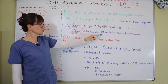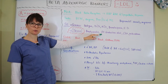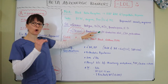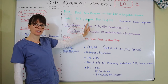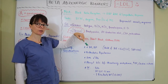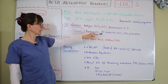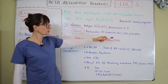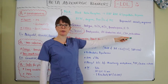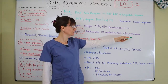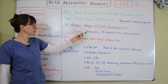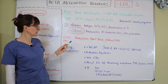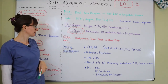Serious side effects also include AV conduction abnormalities, which lower the heart rate when the conduction pathway is not functioning normally. Beta blockers can also lead to congestive heart failure and pulmonary edema, so patients must be carefully monitored for these signs and symptoms.